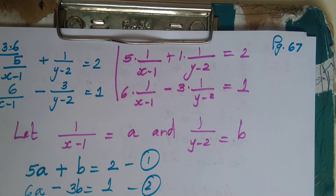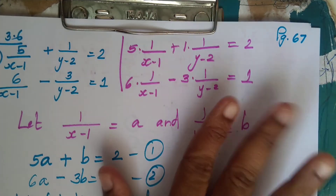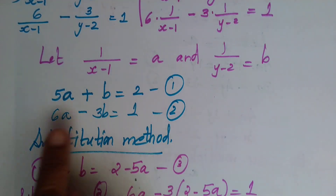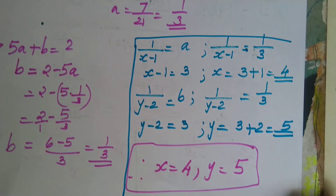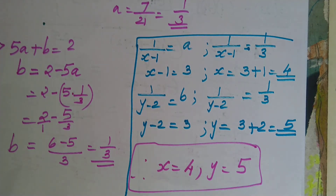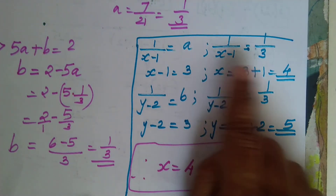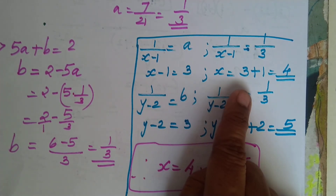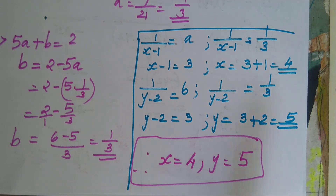So substitution is very important. First, split the equation. Then let the variable expression equal to a or b to get a standard linear form. Find a and b using whichever method you prefer — I used elimination here. Then back-substitute: 1/(x-1) = a = 1/3 gives x = 4, and 1/(y-2) = b = 1/3 gives y = 5. Thank you.